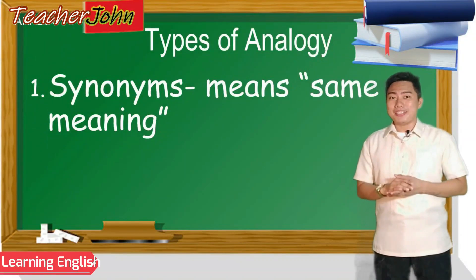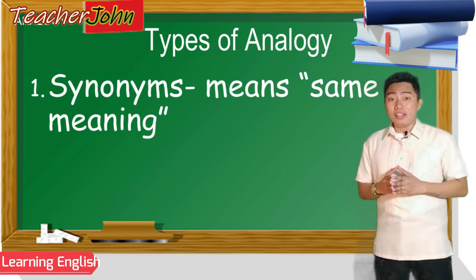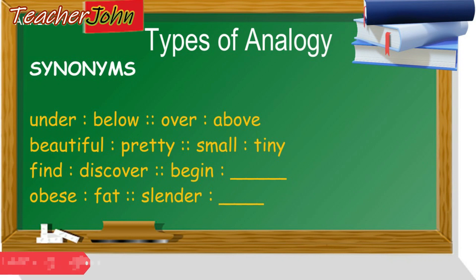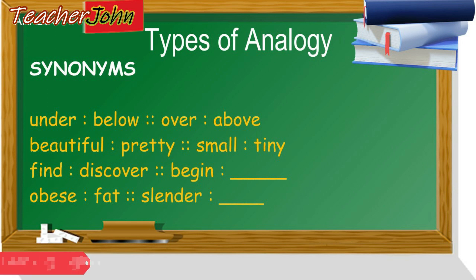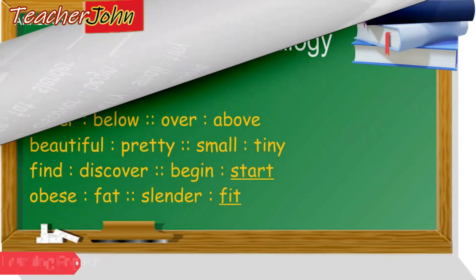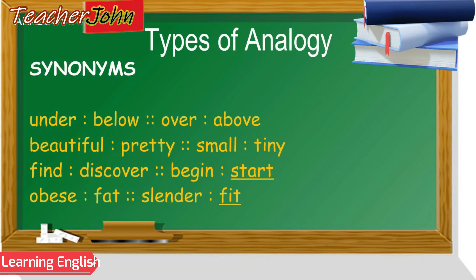The first type of analogy is synonym. Synonyms are words that have the same or nearly the same meaning. Read these examples with me: Under is to below as over is to above. Beautiful is to pretty as small is to tiny. Find is to discover as begin is to start. Obese is to fat as slender is to fit.